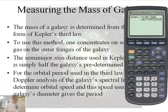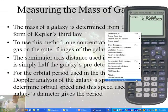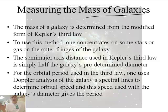OK, one more thing. Let me make the calculator go away. All right, what about the mass of a galaxy? How can we measure the mass of a galaxy? Well, it's determined from a modified form of Kepler's third law. Guess what, we're going to do this in a minute.